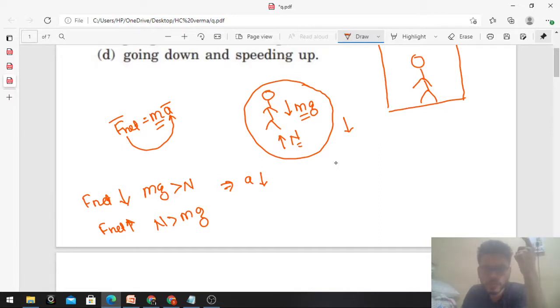Fnet direction is up. In this case, acceleration direction is up. So you can check that normal should be greater than weight. This means acceleration is up in this case.